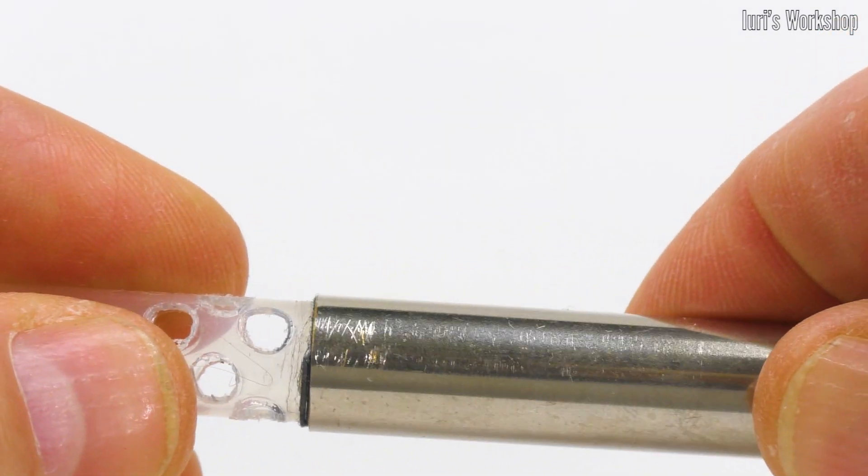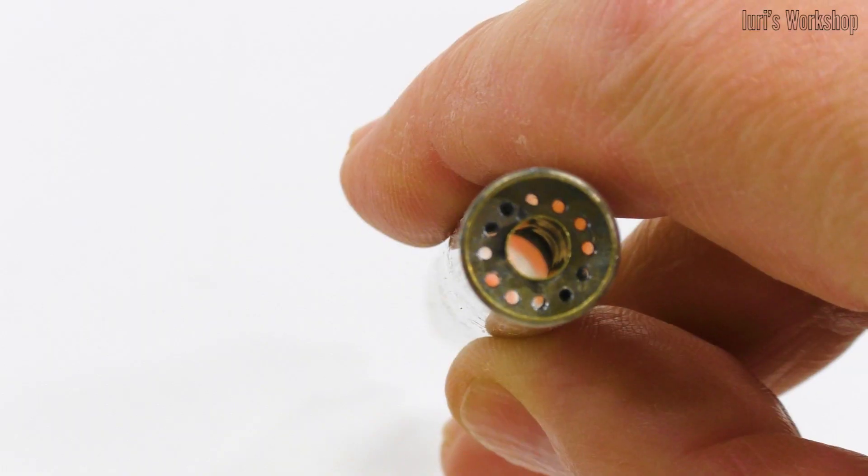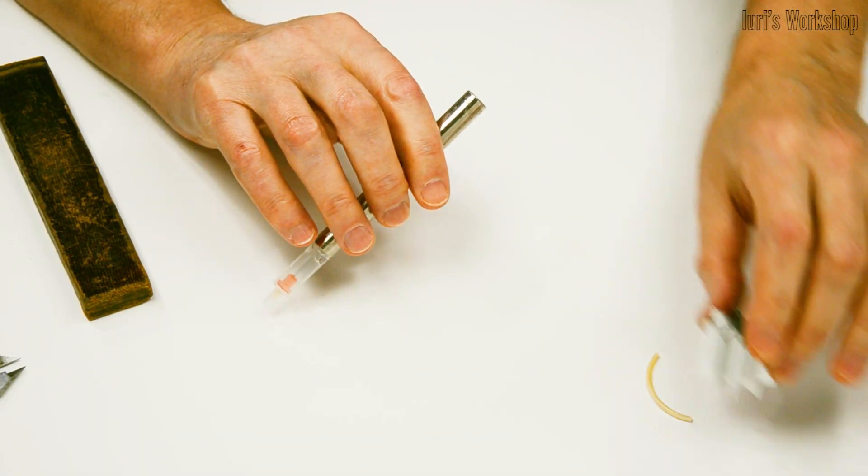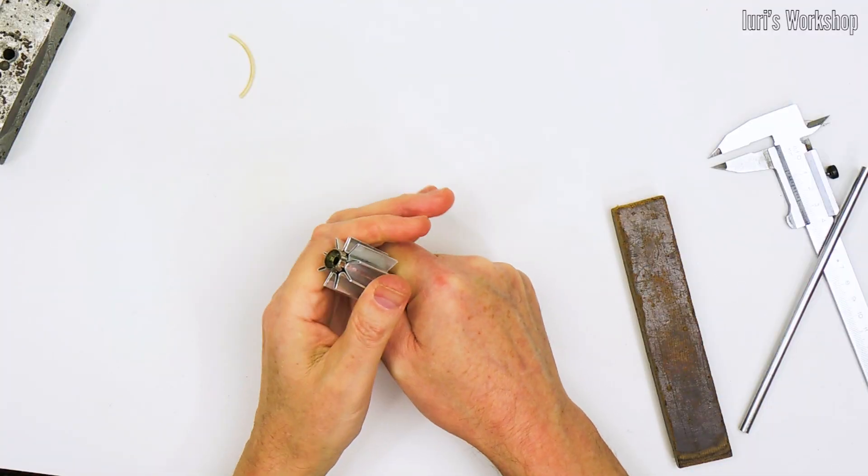There isn't much to explain. We simply dock all three previously assembled assemblies together and get a miniature gas burner.